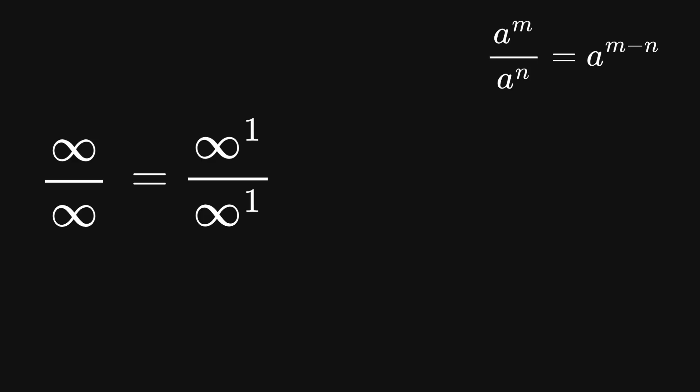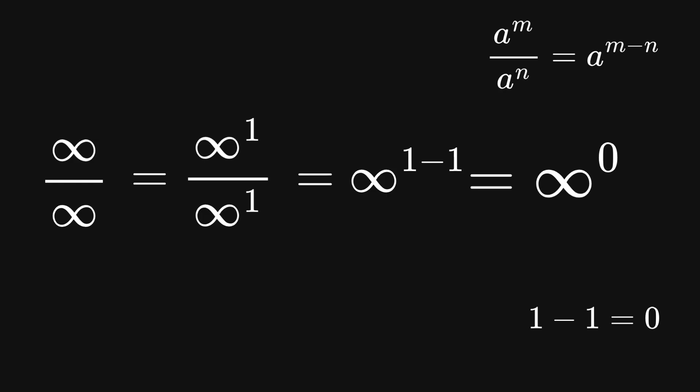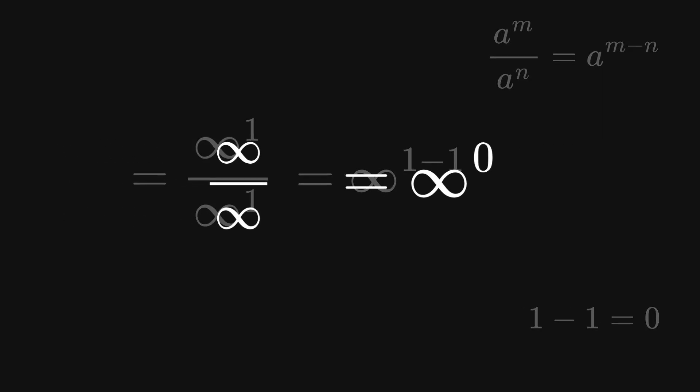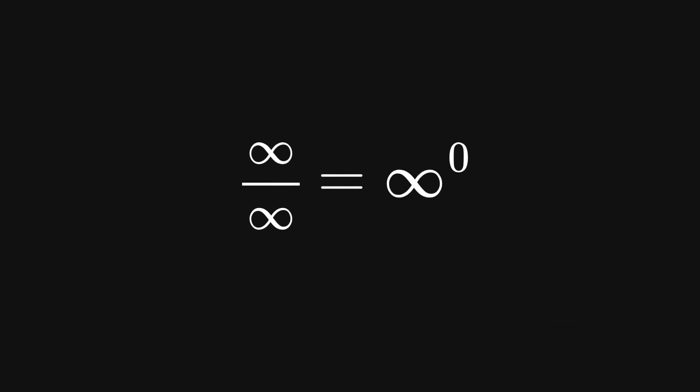Let's take our expression infinity divided by infinity. We can rewrite this as infinity raised to the power of 1, divided by infinity raised to the power of 1. When you divide powers with the same base, you subtract the exponents. So infinity to the first power divided by infinity to the first power becomes infinity raised to the power of 1 minus 1, which equals infinity raised to the power of 0. This means infinity divided by infinity equals infinity to the power of 0 — and since infinity divided by infinity is an indeterminacy, infinity raised to the power of 0 is also a mathematical indeterminacy.